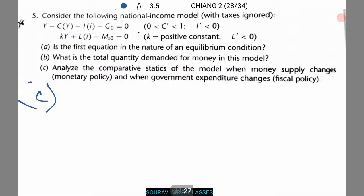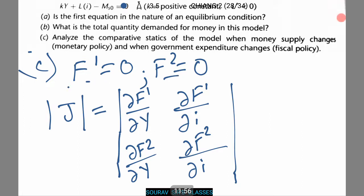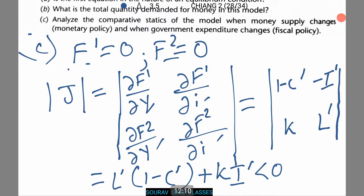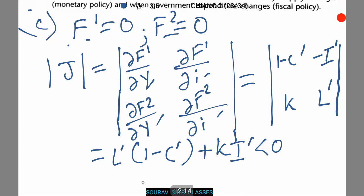Third question is very important. Over here, we will find that f1 equals 0 and f2 equals 0 where f1 and f2 are two equilibrium conditions respectively. Now, we will need to find a Jacobian mod J. We find by using these two equilibrium conditions. First, we differentiate df1 with respect to Y and I and df2 with respect to Y and I and what we get is 1 minus C dash k minus I dash L dash which comes to L dash 1 minus C dash plus kI dash and this is less than 0.